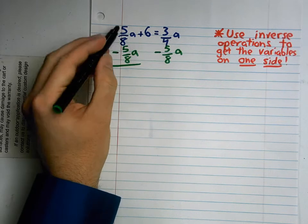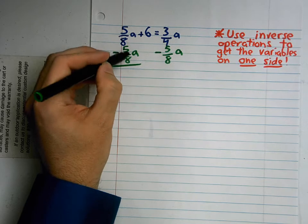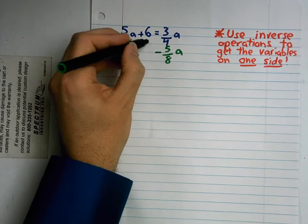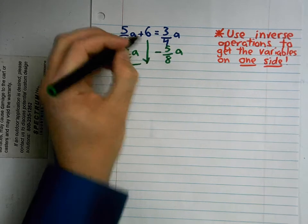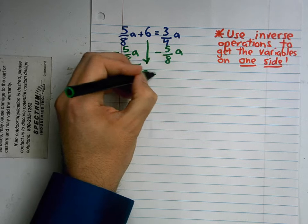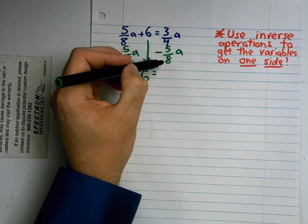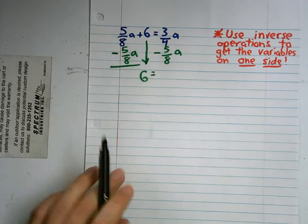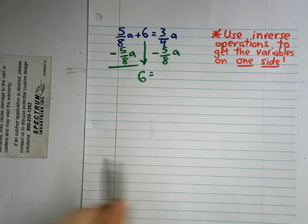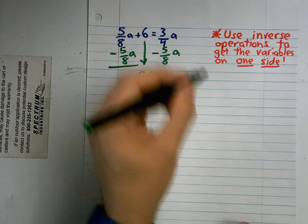Now the good news is, 5/8 a minus 5/8 a, that's just zero. And I'm going to bring my 6 right down here, and my equals sign. But now, 3/4ths a minus 5/8 a, I know how to do that, but it's going to take a little bit more work. So I'm going to come over here and do my subtraction.